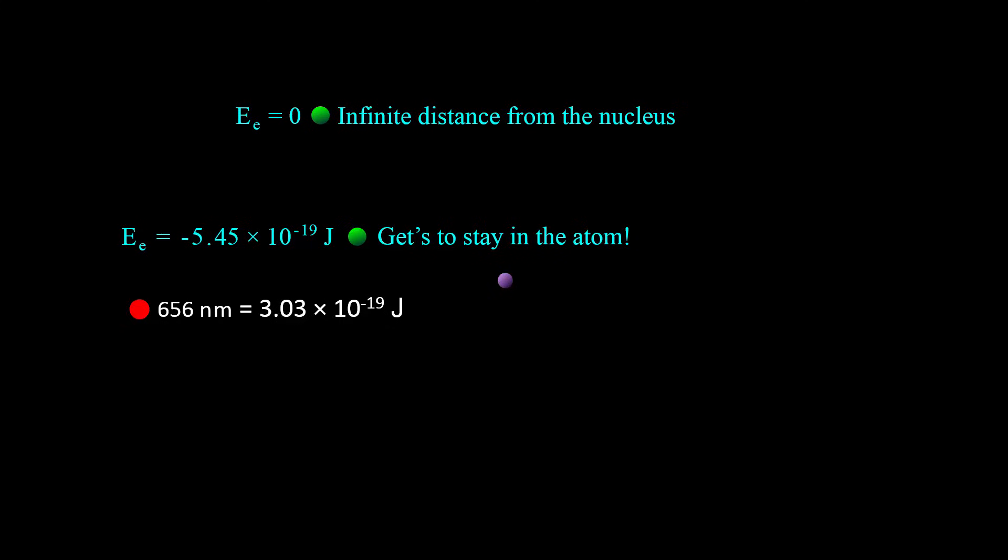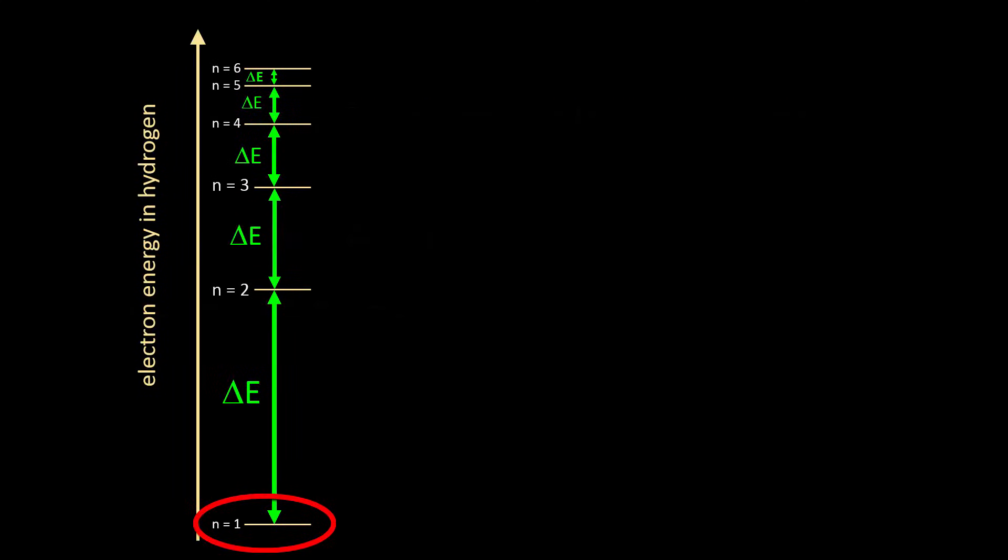A second question. What about N equals 1 or other transitions? Bohr did know that hydrogen also emitted ultraviolet light, which is higher energy than visible light. So transitions to N equals 1 occur, but they are not visible, they are ultraviolet. What type of light do you think would be emitted from an N equals 5 to N equals 4 transition?